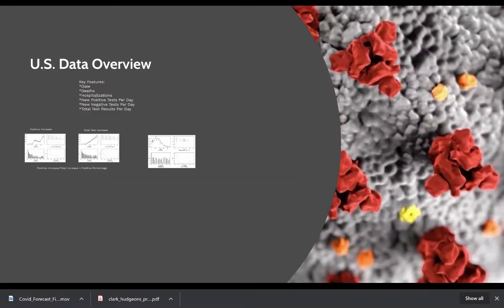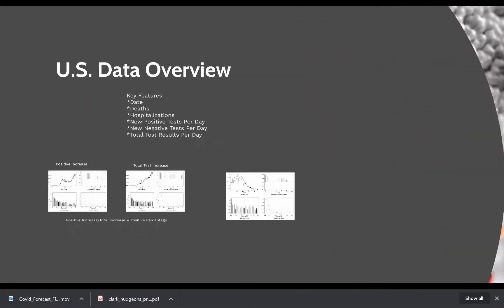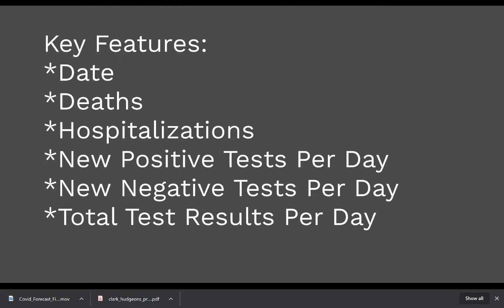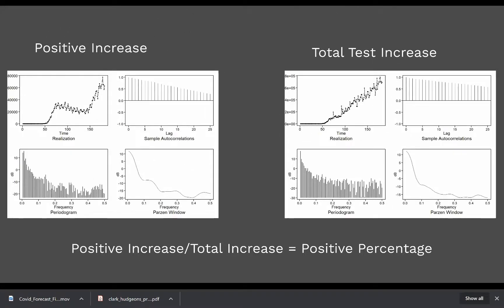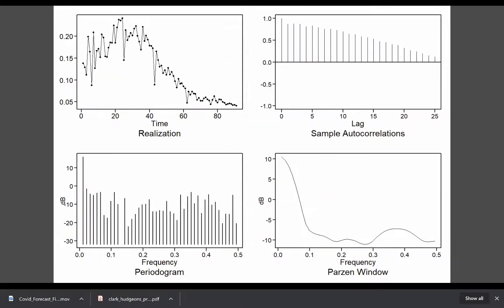Here we want to take a quick look at an overview of the US data. Many of the key features, these are just a few that were hand selected from the attribute table, the ones that we thought were important. In particular importance are the positive increase and the total test increase numbers because it's these two numbers, positive increase divided by total increase, which gives us the positive percentage which is shown here and this is the attribute that we used for most of our forecasting.